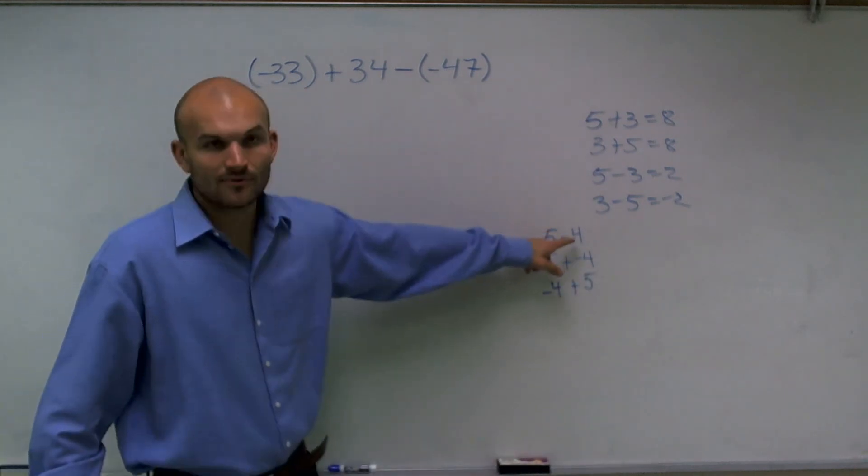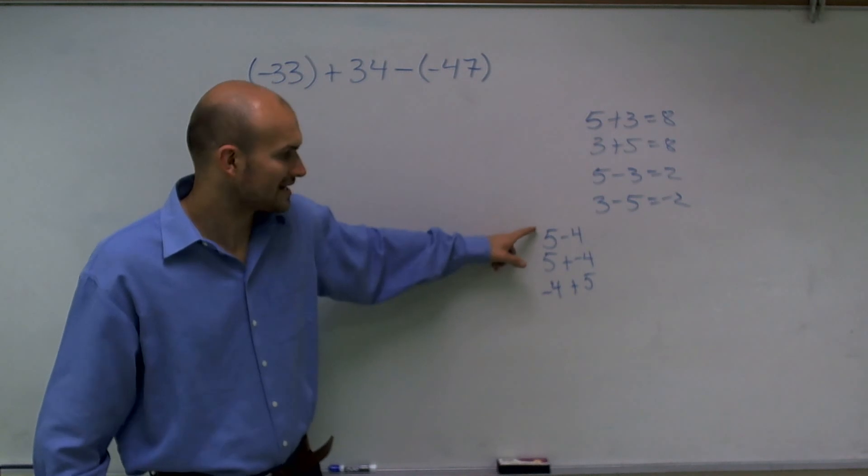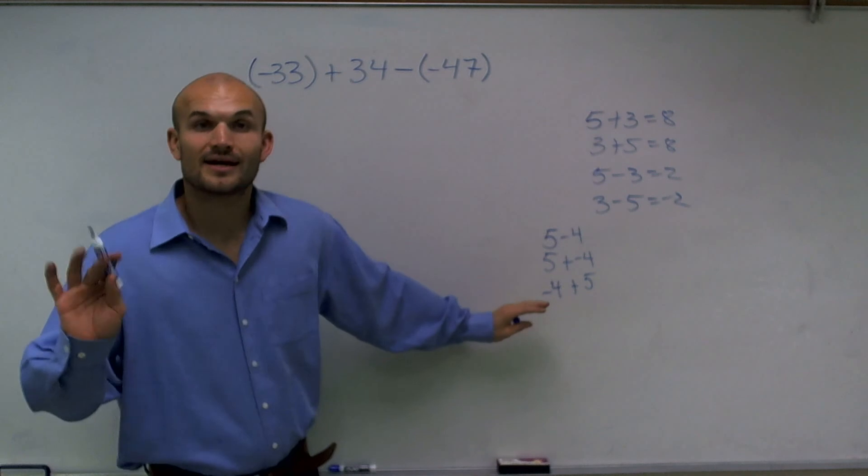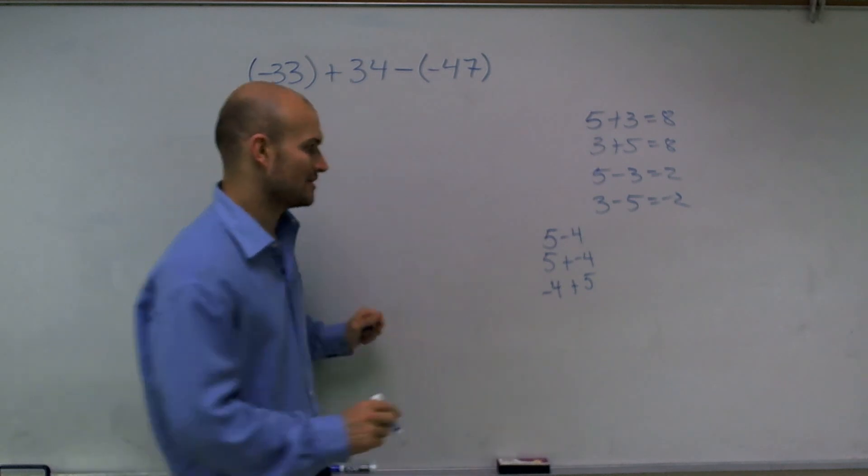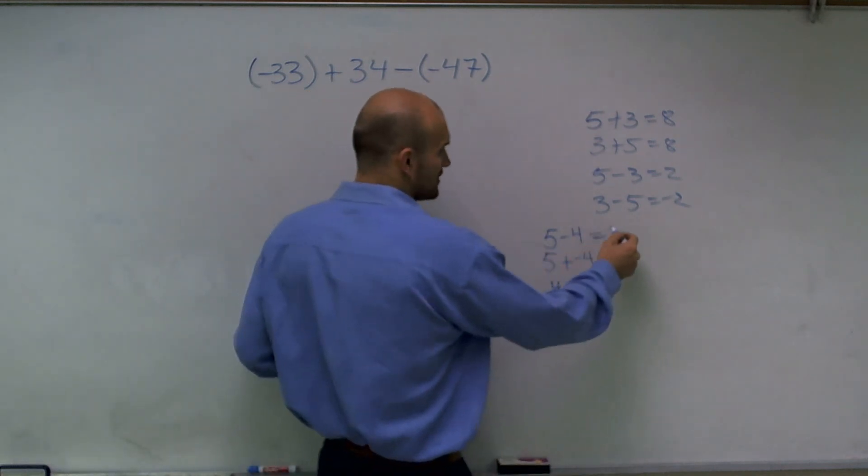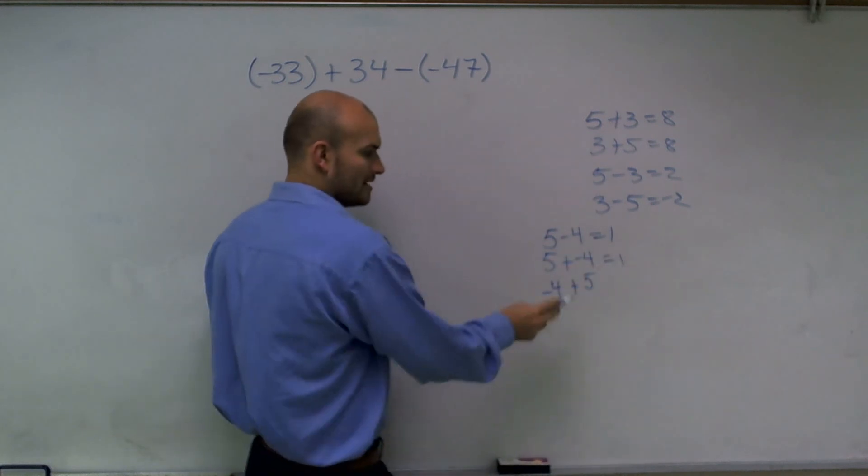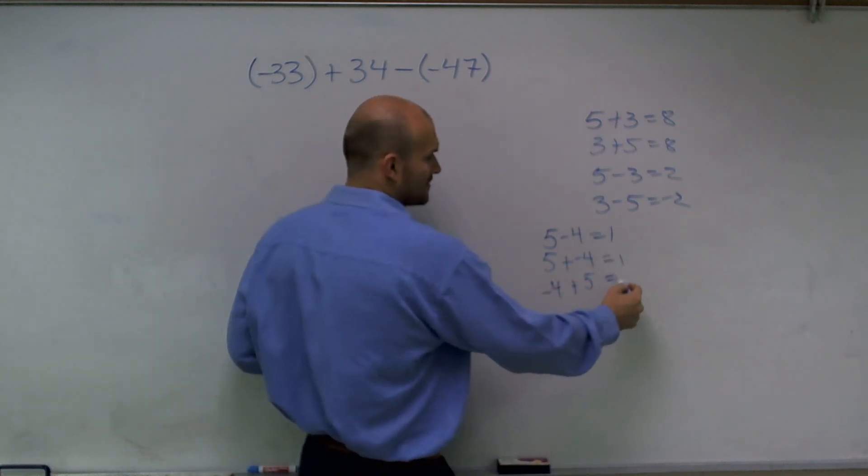See, it's helpful. You can't write 4 minus 5, but what I can do is I can change it to an addition problem, then I can change the terms. It's okay, I didn't change the work. 5 minus 4 equals 1. 5 plus a negative 4 equals 1. Negative 4 plus 5 equals 1.